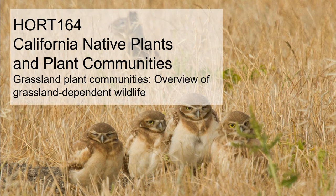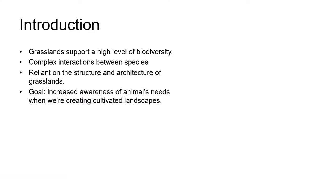Hi everybody and welcome to another lecture in this module on grassland plant communities. In the video lecture introducing you to California's grasslands, you learned that these ecosystems still support a diverse range of native plants in spite of the substantial loss of habitat over the last 200 years. They also support a diverse range of animals, some of which are very visible to us humans but many are hidden between the plants and below the soil surface.